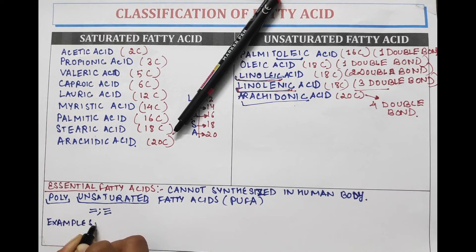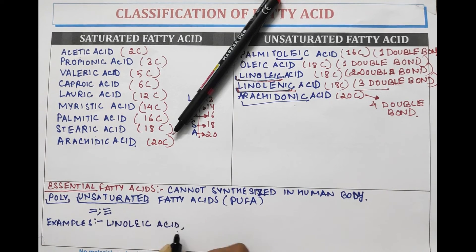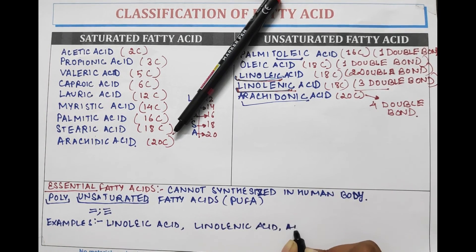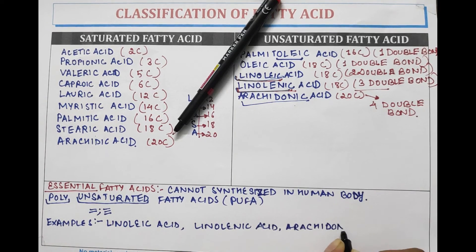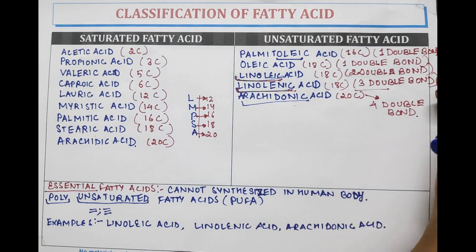The examples of essential fatty acids or polyunsaturated fatty acids are linoleic acid, linolenic acid, and arachidonic acid. That's all about the classification of fatty acids. Thank you for watching this video.